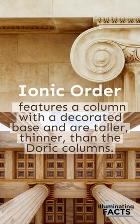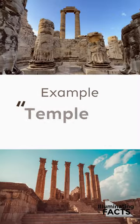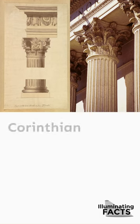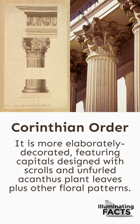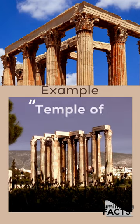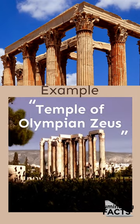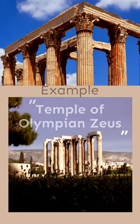The Ionic order features a column with a decorated base and is taller and thinner than the Doric. Example: the Temple of Artemis. The Corinthian order is more elaborately decorated, featuring capitals designed with scrolls and unfurled acanthus plant leaves, plus other floral patterns. Example: the Temple of Olympian Zeus.